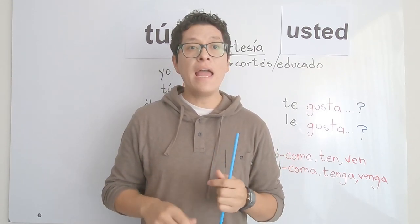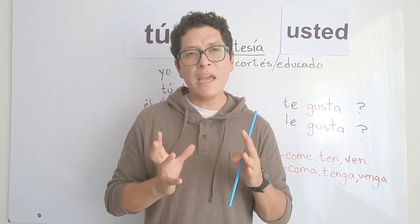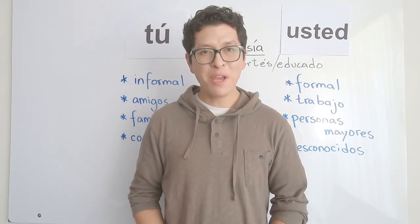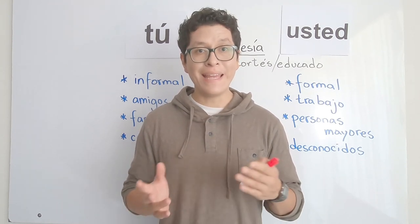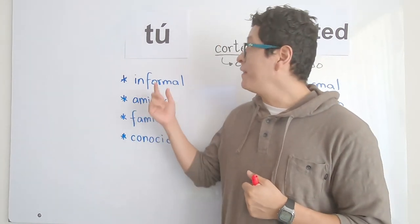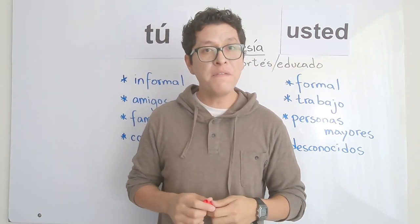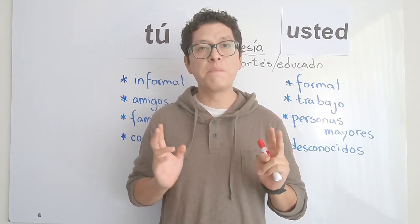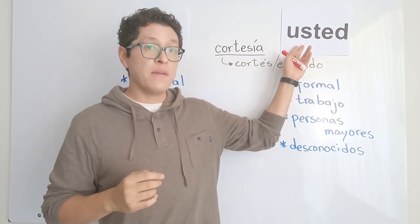In the next part I'll explain a little about the degree of politeness we use and also some variations in different Spanish dialects. En esta parte del video voy a explicarles algunas características de cada uno de estos pronombres personales. Here I have tú on one side and usted on the other.